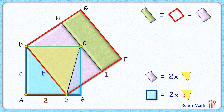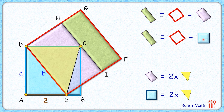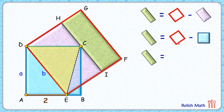Since two times the triangle area appears on both sides, we can conclude that the purple rectangle area equals the blue square area. Replacing the purple rectangle with the blue square in our first equation, the green rectangle area equals b squared minus a squared.